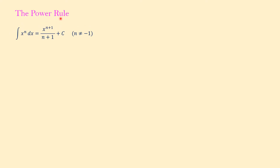This rule is the corresponding rule to the power rule that we had in differentiation. When we wanted to differentiate a function like x to a power, x to the n, we bring the power to the front and subtract the power by 1. But in integration, the opposite of differentiation, we add to the power and put the new power in the denominator. So the antiderivative or integral of x to any power equals x to the power of n plus 1 over n plus 1. Note that n cannot be equal to negative 1.